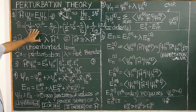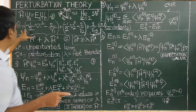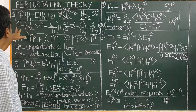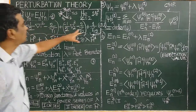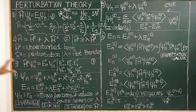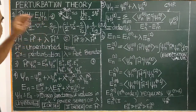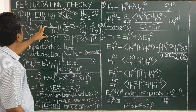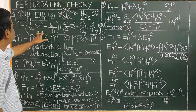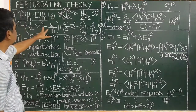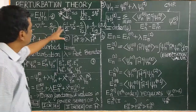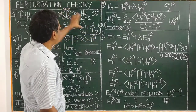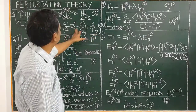The Hamiltonian operator is constructed. In atomic units, H-cap equals minus one-half del-squared minus 2 over R1, minus 2 over R2, plus 1 over R12. The first term is the kinetic energy and potential energy for electron 1, the second term is for electron 2, and the third term is the inter-electronic repulsion term.